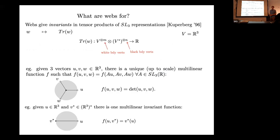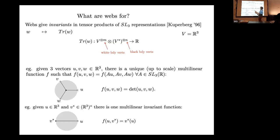What are webs for? Webs come from representation theory. Every time you have a web it gives you a certain function called the trace of the web, which is a multilinear function that takes a bunch of vectors and co-vectors and gives you a number. The domain takes m vectors — all in R³ — one for each white boundary vertex, and n co-vectors, one for each black boundary vertex, and that spits out a number.